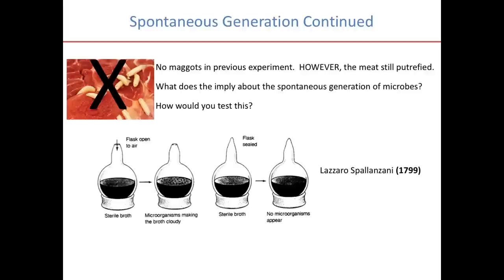The experiment performed to address this question was conducted in 1799. Lazaro set up a flask with sterile broth — broth that didn't have any microbes in it — and made the flask open to the air so that microbes could drop in. Microorganisms did indeed enter. However, when he prepared a similar broth and sealed the flask, no microorganisms appeared.